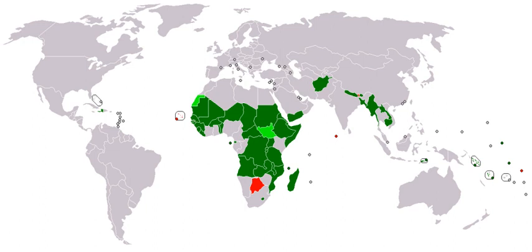The term 'Global South' began to be used more widely since about 2004. It can also include poorer, southern regions of wealthy, northern countries. The Global South refers to these countries' interconnected histories of colonialism, neo-imperialism, and differential economic and social change through which large inequalities in living standards, life expectancy, and access to resources are maintained.